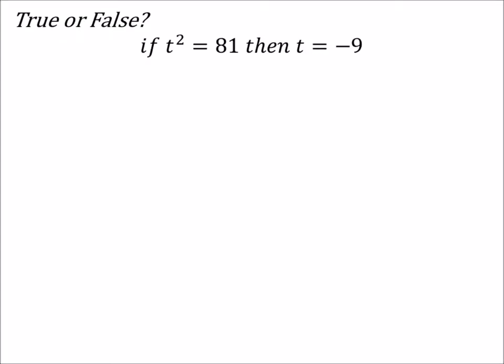All right, you guys, you got to be careful with this one because based on the last one, it was if t equals 9, then t squared equals 81. That was true because of the order of things.